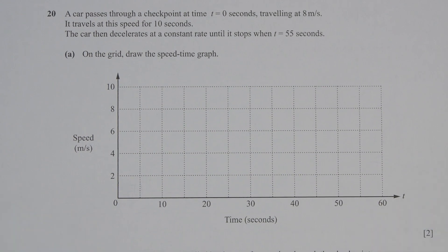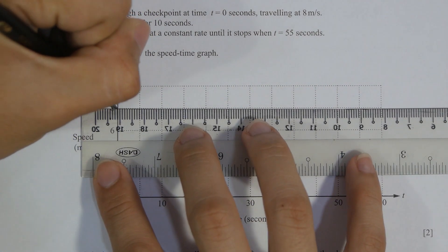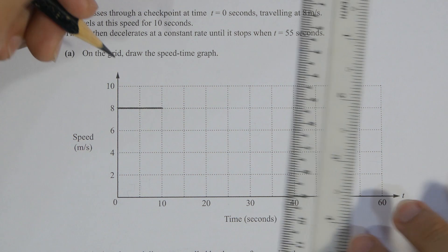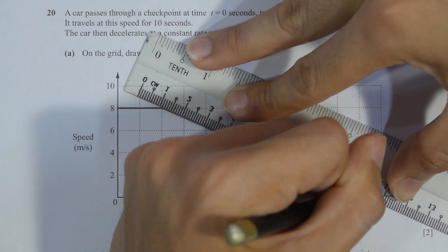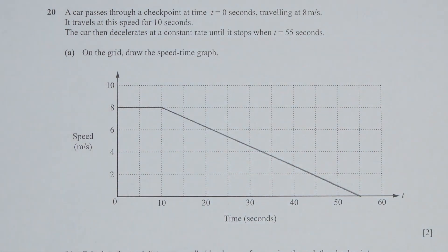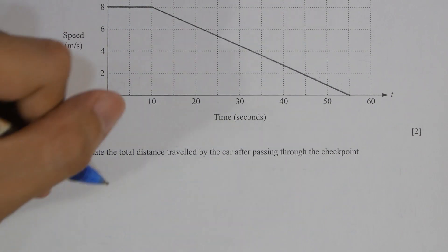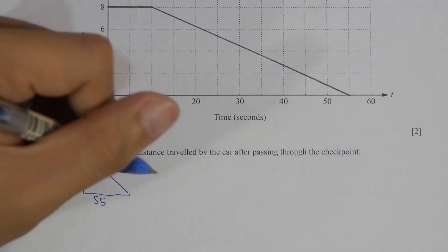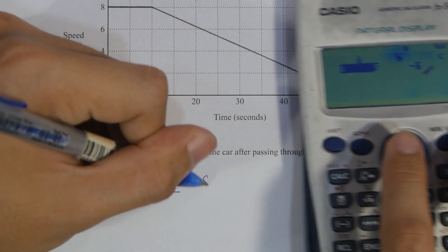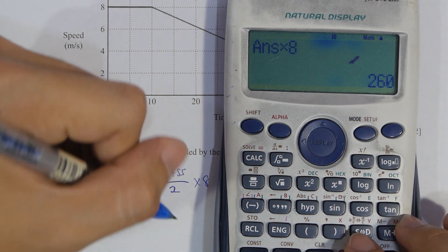For question 20, find the total distance. For this one, simply find the area of this particular shape. So I treat it as a trapezium. So 10 plus 55 divided by 2, multiplied by 8. Then I will get the total distance as 260 meters.